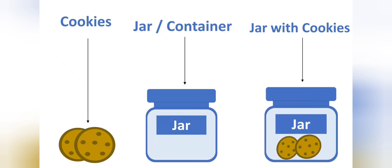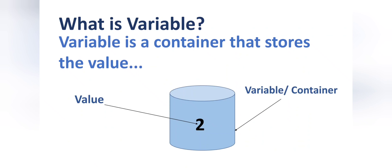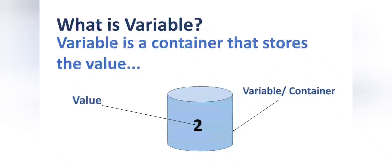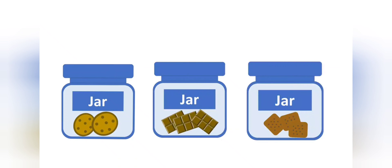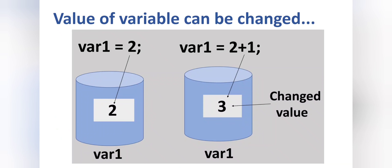That means in Java, a variable works as a container to store a value or any data, so that we can use that value in our program. The second thing about a variable is that its value can be changed — the meaning of 'variable' itself is to vary or to change. See here, instead of cookies we can store chocolates or biscuits into the jar, so the content of the jar can be changed.